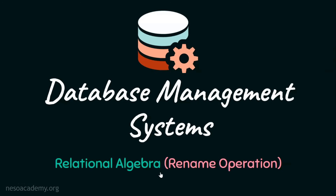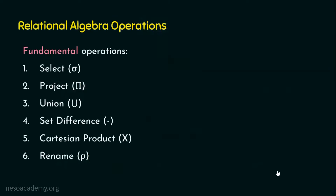Hello everyone, welcome back. In this presentation, we are going to focus on the relational algebra rename operation. We know basically there are six fundamental relational algebra operations: the select, project, union, set difference, Cartesian product, and rename. We have already seen the first five fundamental operations in the previous lectures. Now we are going to focus on the last fundamental relational algebra operation, the rename operation.